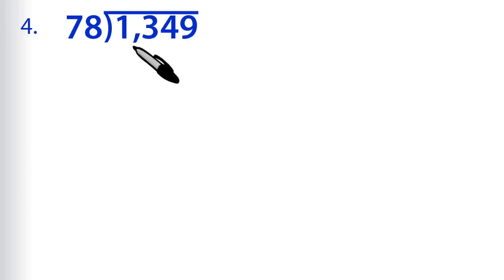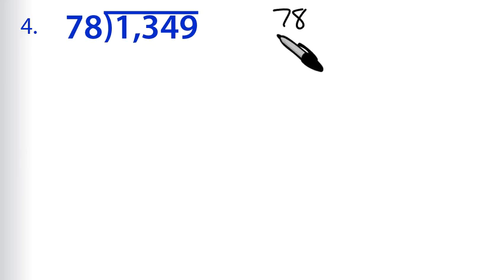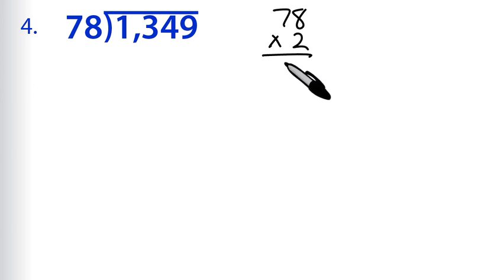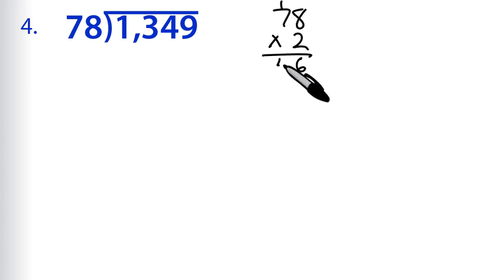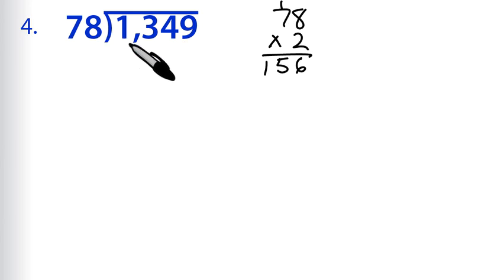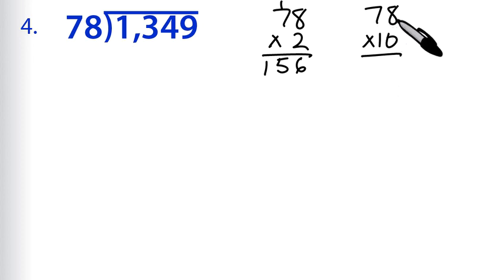For problem 4, we have 1,349 divided by 78. We'll get our multiples of 78. We'll start with 78 times 2. 78 is not as obvious for doubling, but 2 times 8 is 16, and 2 times 7 is 14 plus that 1, so 156. Let's also use a multiple of 10: 78 times 10 is 780. Let's see if those two will be enough.